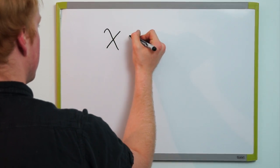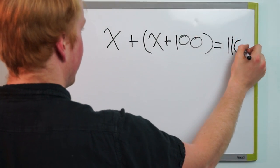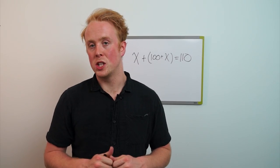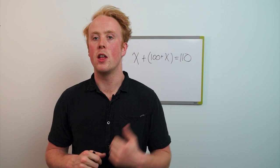So what do we know here? We know that the sum total of both items is one dollar and ten cents or one hundred and ten as I have written up on the board there. We also know that one item cost one hundred cents or one dollar more than the other item.